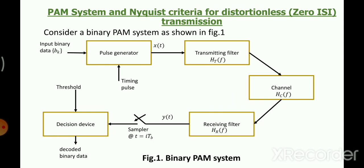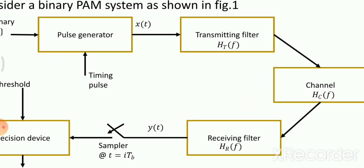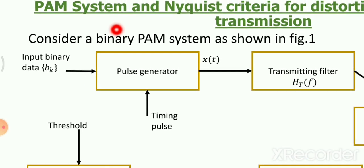We are going to study a simple digital communication system and try to find the condition for zero ISI — called distortion-less transmission. For this we study a PAM system — specifically binary PAM. PAM (Pulse Amplitude Modulation) is basically an analog technique, but binary PAM is digital because information is in the form of binary bits.